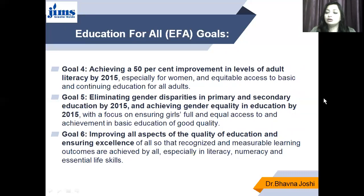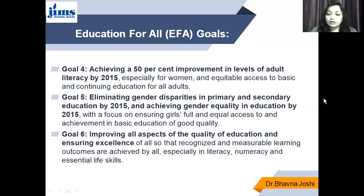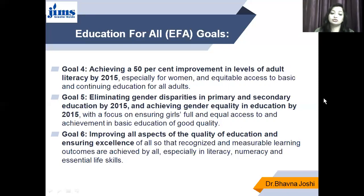Goal number four is achieving a 50% improvement in the level of adult literacy by 2015, especially for women and adults who have basic education and want to continue. EFA doesn't only care about children but also about adult literacy. Goal number five is eliminating gender disparities in primary and secondary education by 2015 and achieving gender equality in education by 2015. Goal number six is improving all aspects of quality of education and ensuring excellence, providing quality education especially in literacy, numeracy and essential life skills.